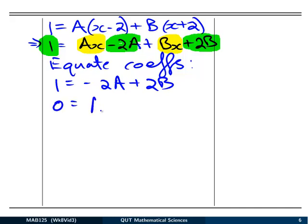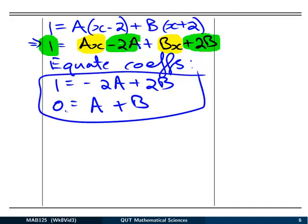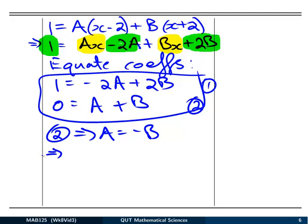So we've got two equations for two unknowns, A and B. Let's just take this second one, let's call them equation 1 and equation 2. Equation 2 implies that A is -B, just by rearranging that equation. Now if we substitute that into 1, we can say that 1 is equal to -2 lots of A, which is -2 lots of -B, which is 2B, plus 2B.